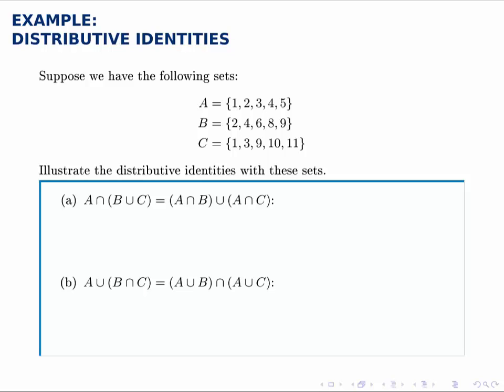In this example we're given the same three sets as in the previous example, but now we're illustrating the distributive identities. The distributive identities are similar to what you would have done in algebra, where if you had something like 2(x+3), you could distribute this multiplication across this addition by multiplying 2 times x and then multiplying 2 times 3 and adding those. So we distribute the multiplication across the addition.